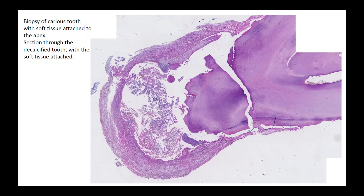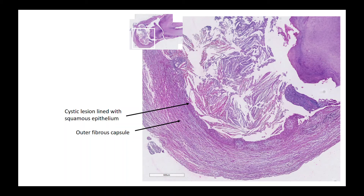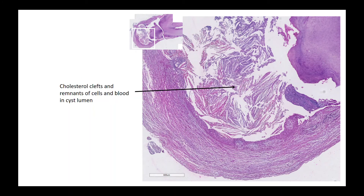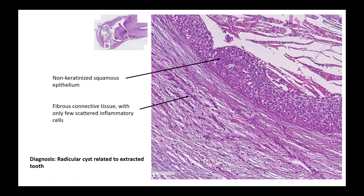The next biopsy is from a carious tooth with soft tissue attached to the apex, decalcified before sectioning and staining. In this case there is a central lumen indicating cyst formation, confirmed by a cyst wall with epithelium towards the lumen and an outer fibrous capsule. The apex border is irregular, indicating resorption. The cyst lumen contains cholesterol clefts and remnants of cells and blood — clinically seen as a highly viscous, grainy, yellowish liquid. The epithelium is non-keratinized squamous epithelium, typical for a radicular cyst.